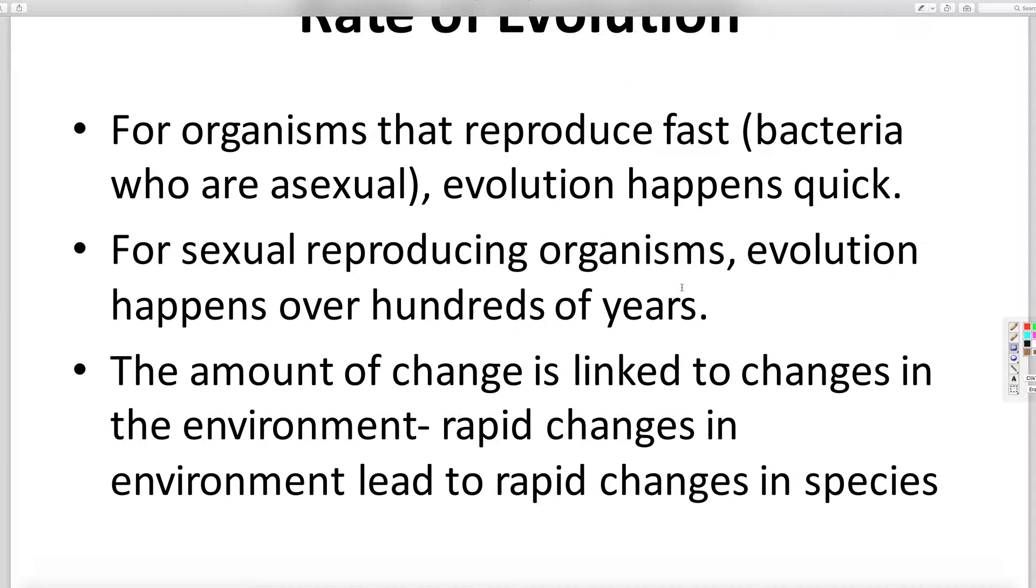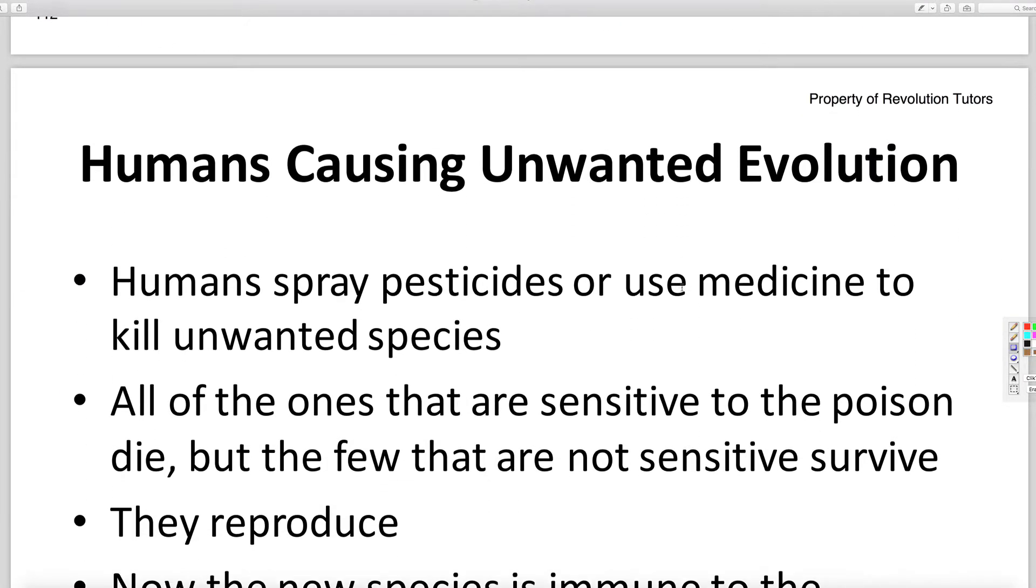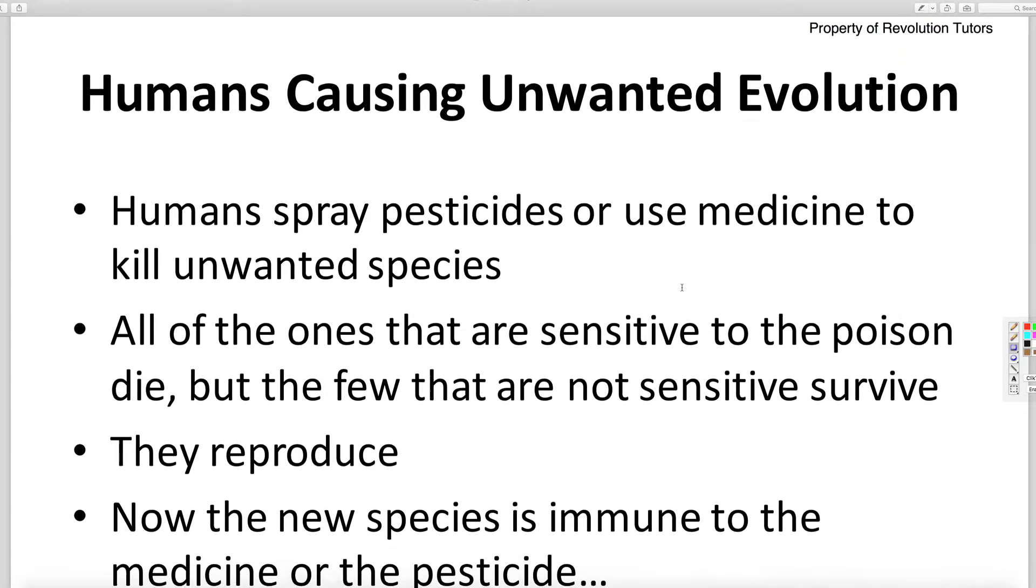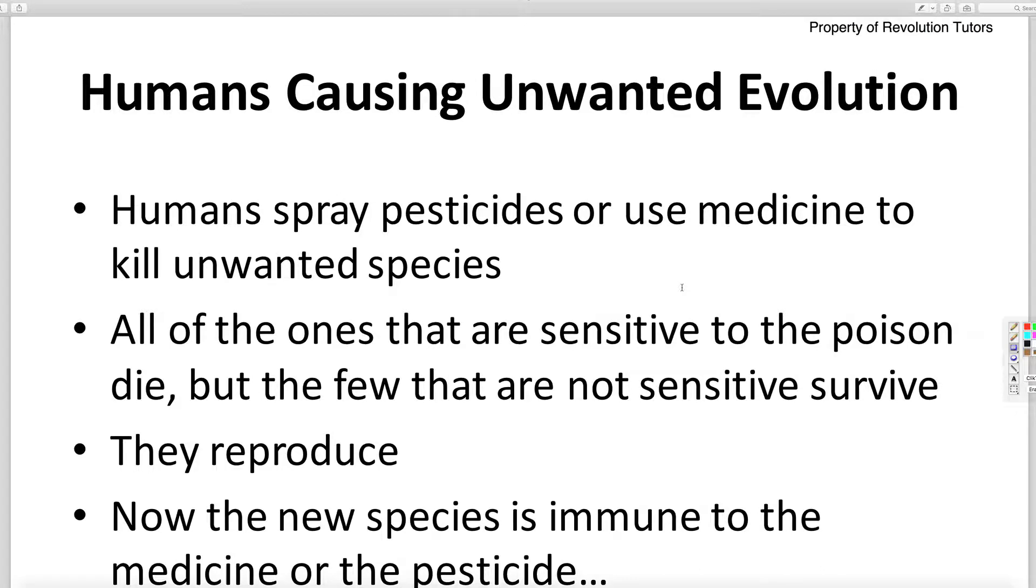For organisms who reproduce fast, evolution happens even quicker, because they reproduce speeding quick. So, we spoke about unwanted evolution that humans could cause. So, I'll give you an example now.